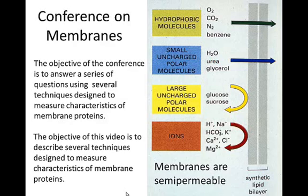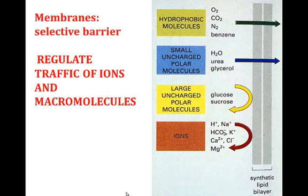Membranes are semipermeable, that is some things go through, other things do not. Sometimes things do not that you need to go through, so you have proteins in the membrane that will facilitate transport in or out of a cell. Membranes are selective barriers. Some things go in, others do not. They also regulate traffic of ions and macromolecules.